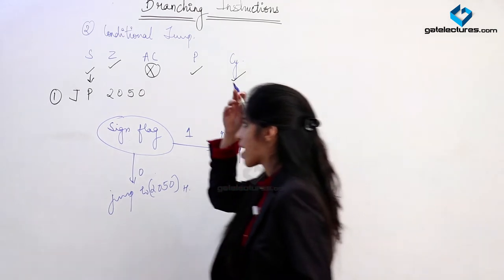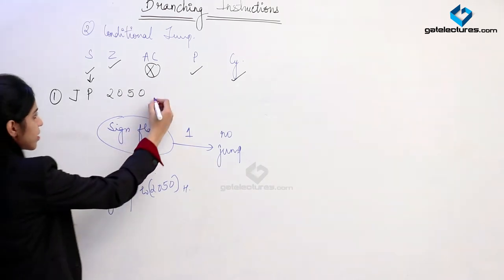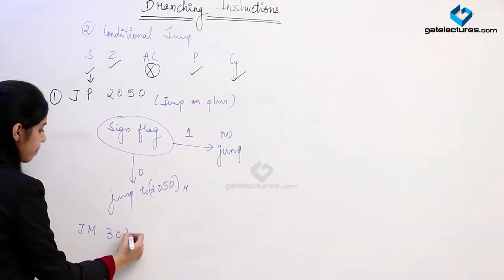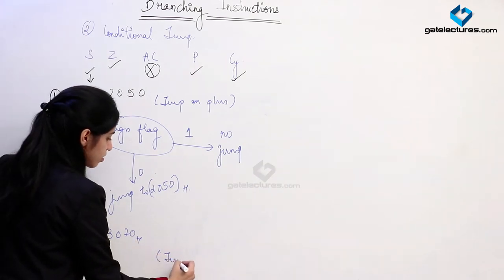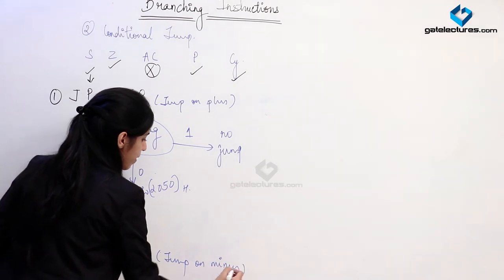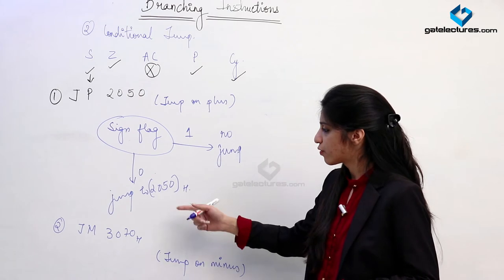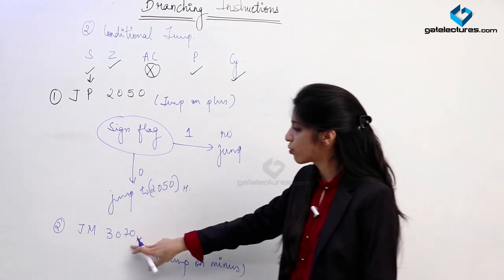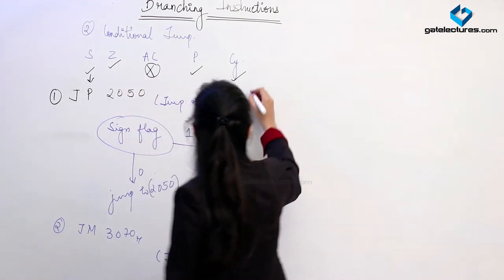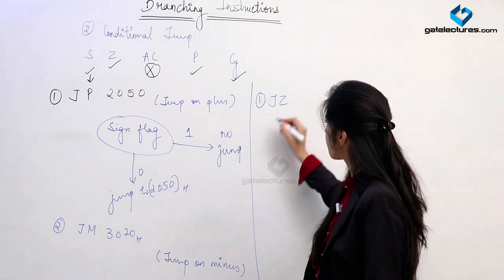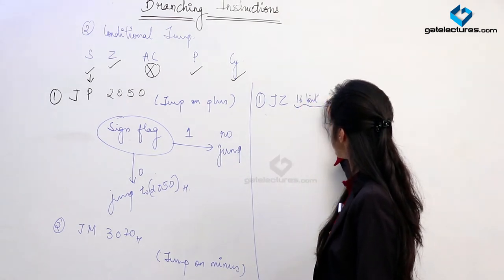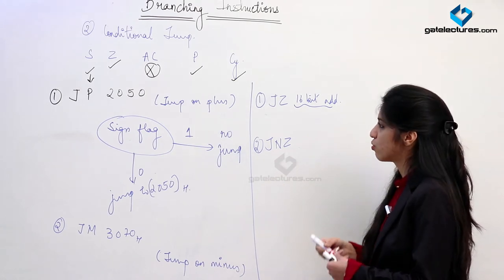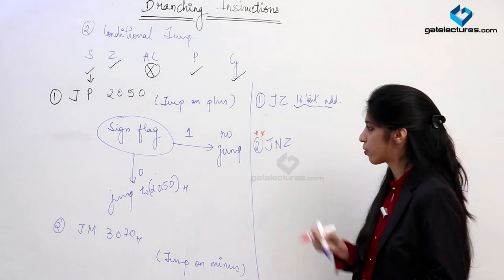Similarly, based on the zero flag, we are having two instructions: JZ — jump on zero — and JNZ — jump on not zero. JNZ is used widely in programming. What we do here is check the status of the zero flag: if the zero flag is not 1, that is, if the result is not zero, we are going to make the jump.